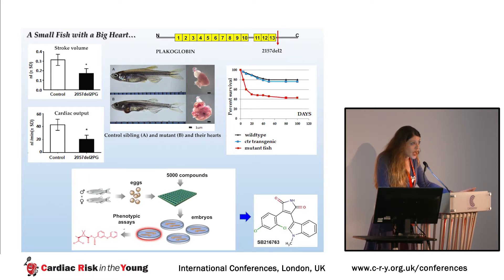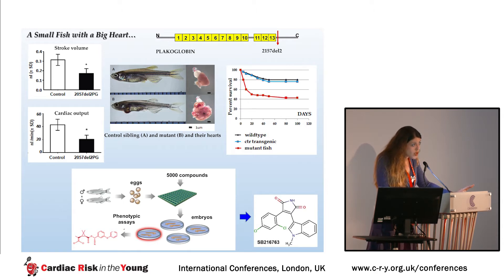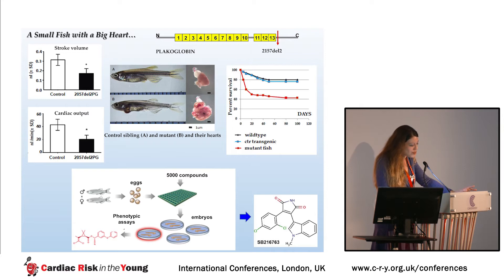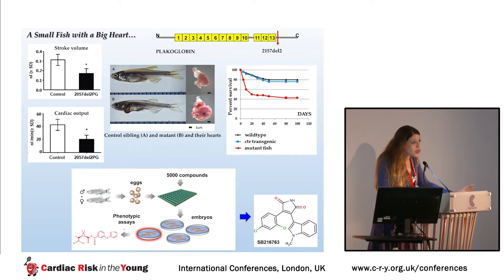We used this line to screen a library of 5,000 bioactive compounds looking for disease modifiers. And out of these 5,000 drugs, one compound, SB216763, which I will refer to as SB2 for the remainder of the talk, showed a remarkable ability to alleviate bradycardia and contractility defects and remarkably increased survival in the mutant fish.